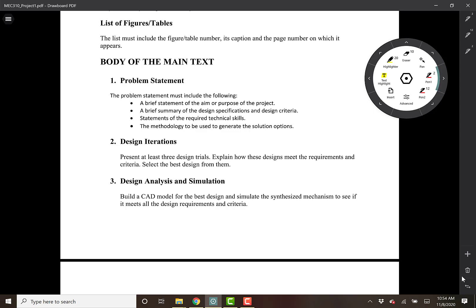Now the body of the text should be divided into five chapters as shown here. Now within these, you can create separate subsections. That is fine. However, you should follow this order that is shown here.